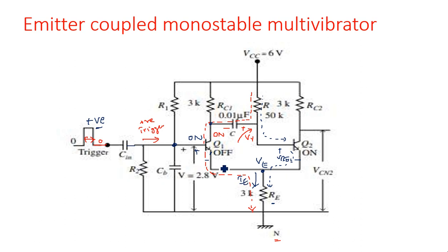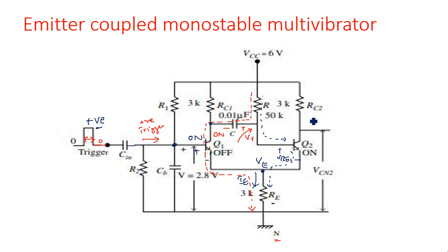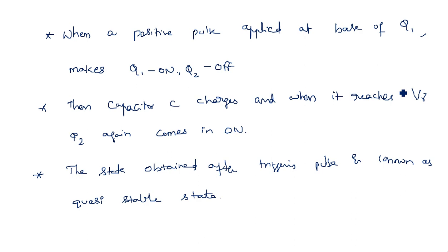This is about the emitter coupled monostable multivibrator, where the emitters of the transistors are coupled together. It produces a stable state where Q1 is off and Q2 is on. When a positive going triggering pulse is applied, Q1 comes into on state and Q2 goes off for a short duration, then the states return to stable because of the capacitor charging to cut-in voltage. In the next video, I will explain the expression for gate width calculation for this emitter coupled monostable multivibrator.